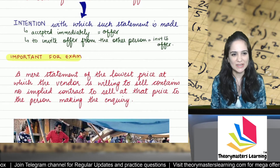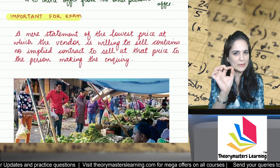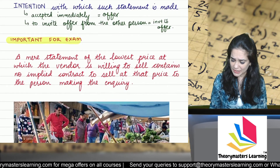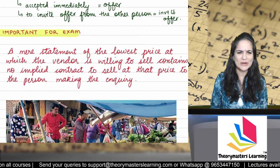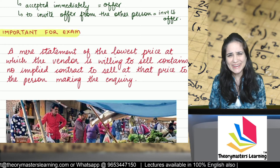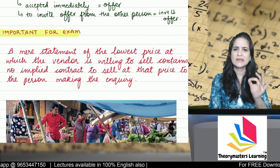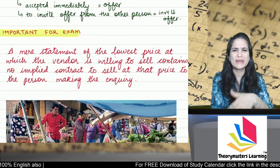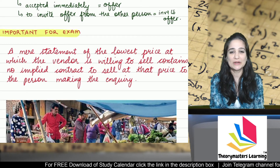Now, very very important for exam — students, once you read the module, there is one point which I feel is important for exam and can be asked: 'A mere statement of the lowest price at which the vendor is willing to sell is not an implied contract to sell at that price to the person making the inquiry.' It sounds confusing but it's very important for the exam. Let me simplify it — a seller telling you their lowest price does not mean it is an implied offer or implied contract to sell at that price.